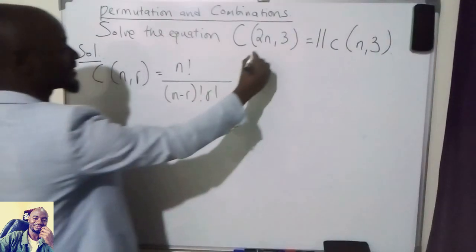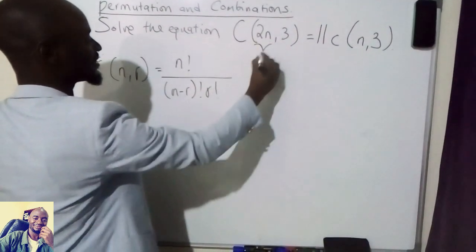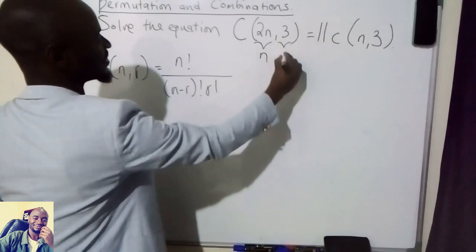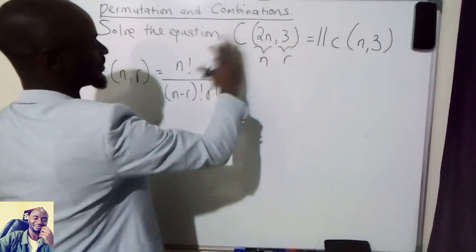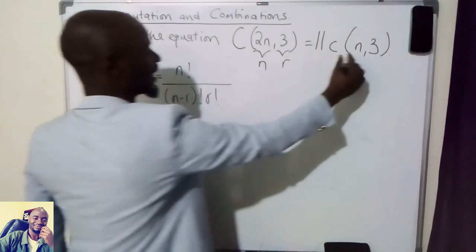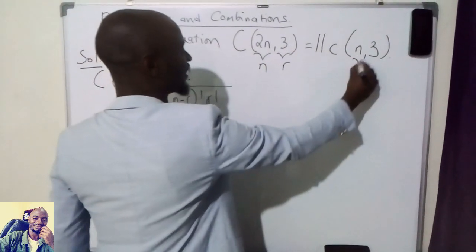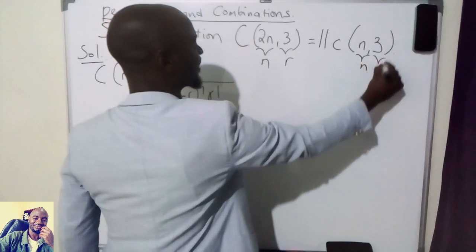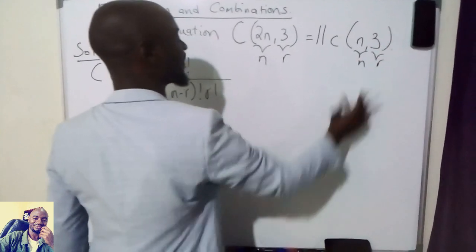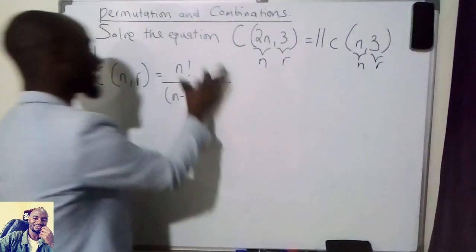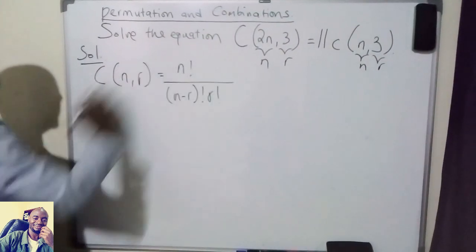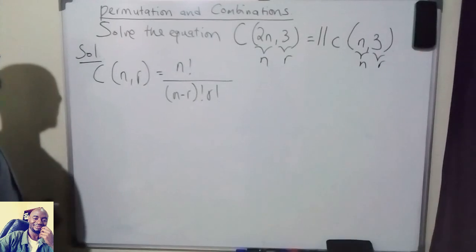So I can say this is n and this is r for the first part, and this would be n and this would be r for the second part. So I'm going to apply the definition of a combination.